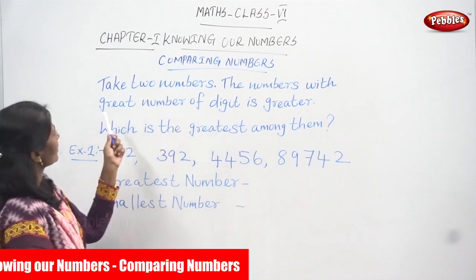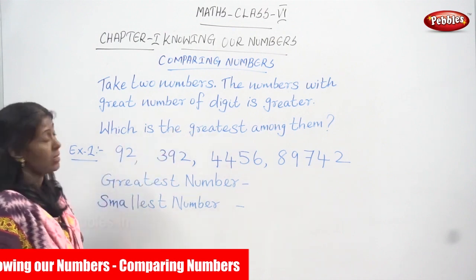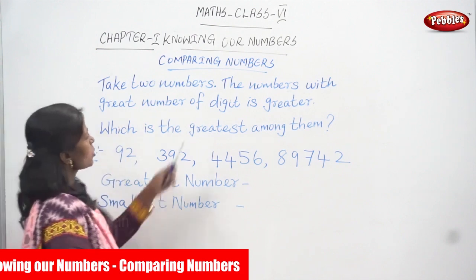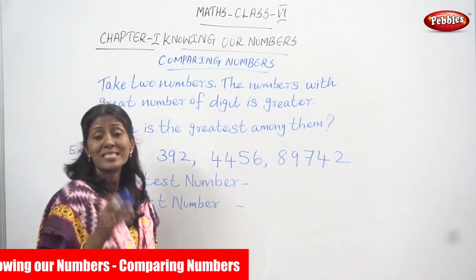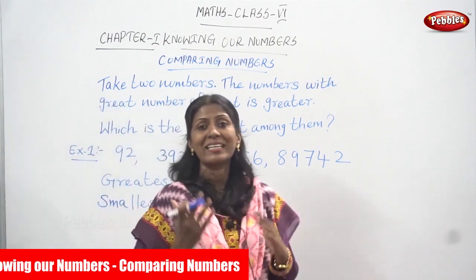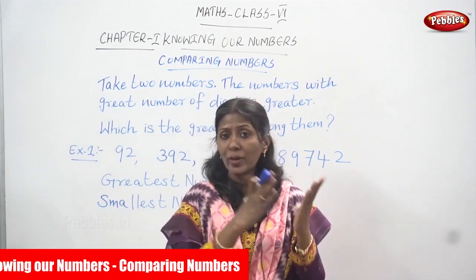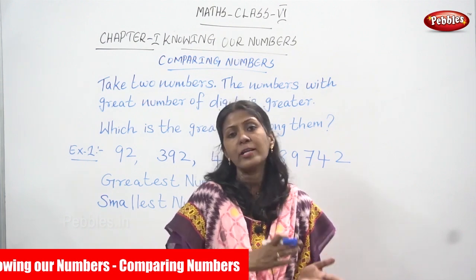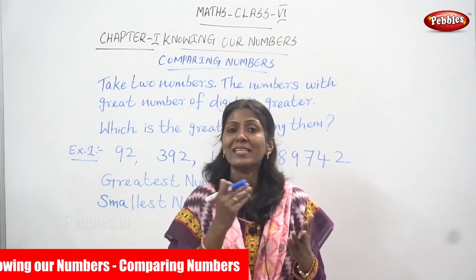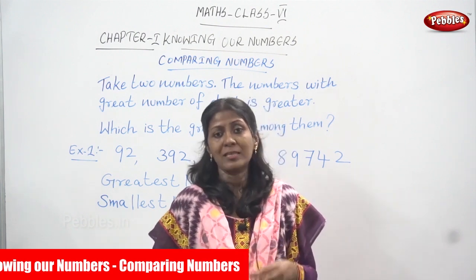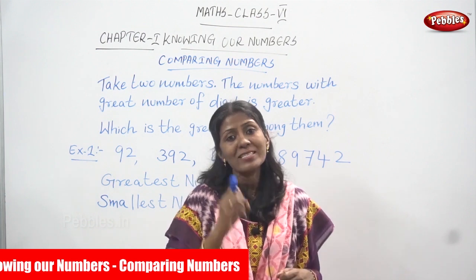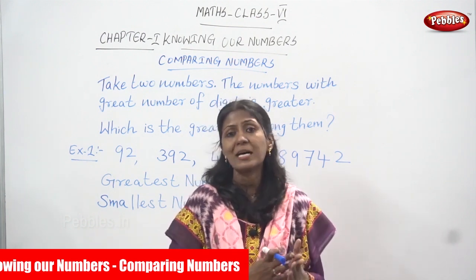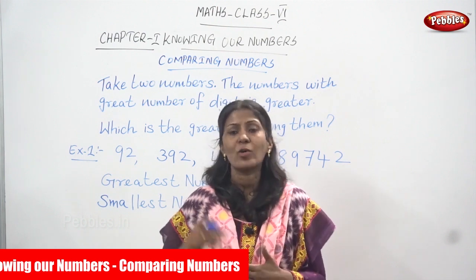Take any two numbers. The number with a greater number of digits is greater. You must count only the digits. If you want to find out the greater number, you can determine it according to the digit count alone. The number of digits is very important to find out the greater number. Whichever number has more digits is called the greater number.